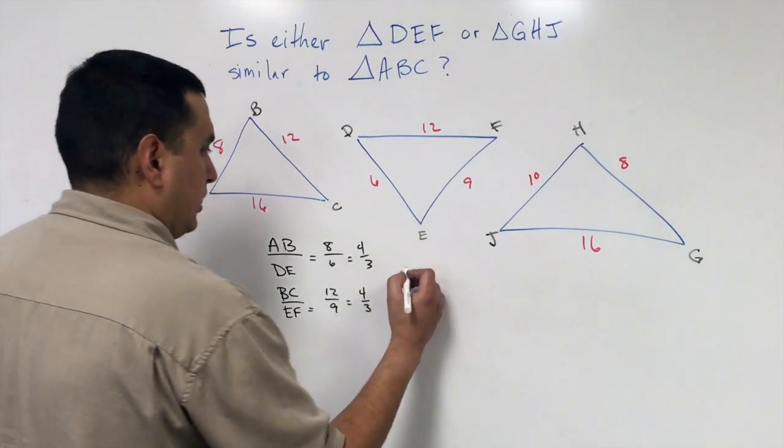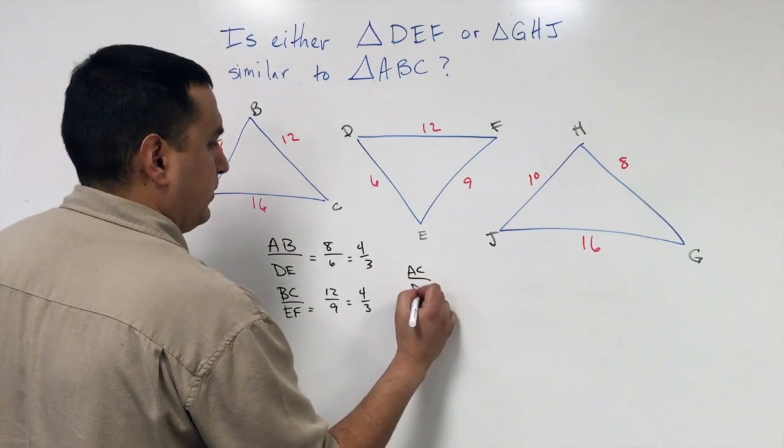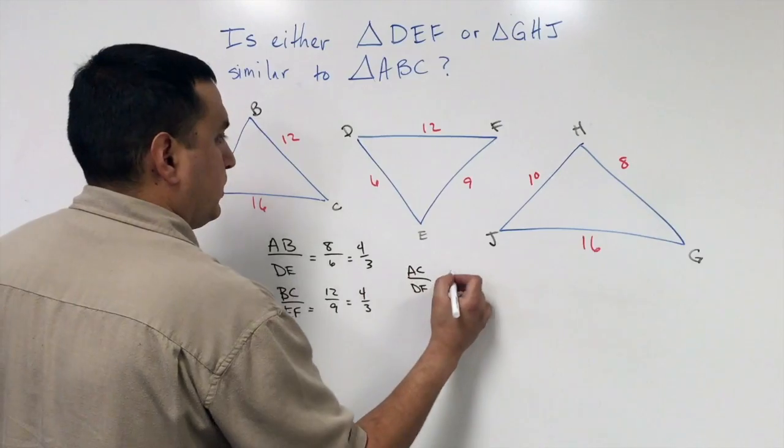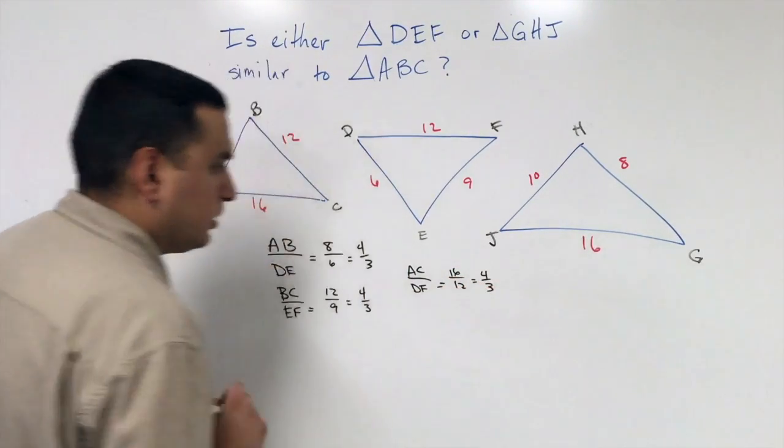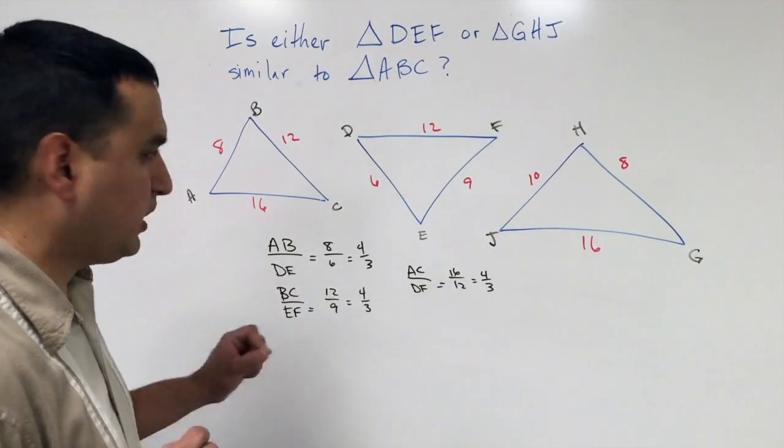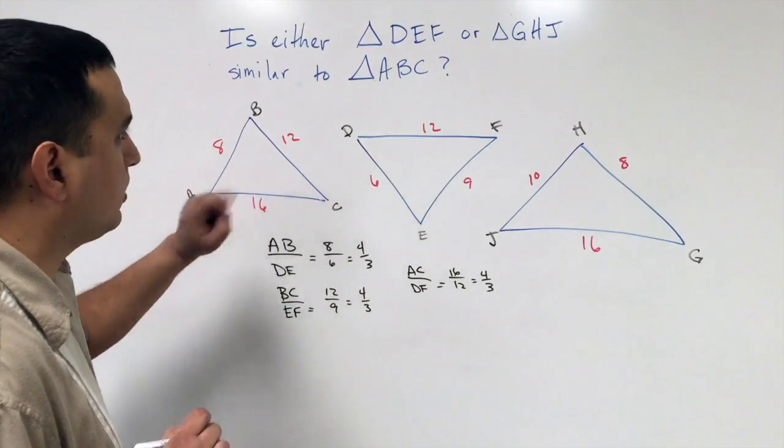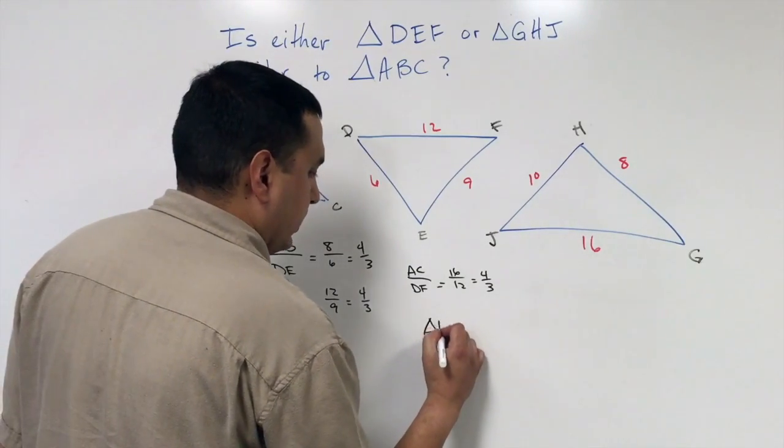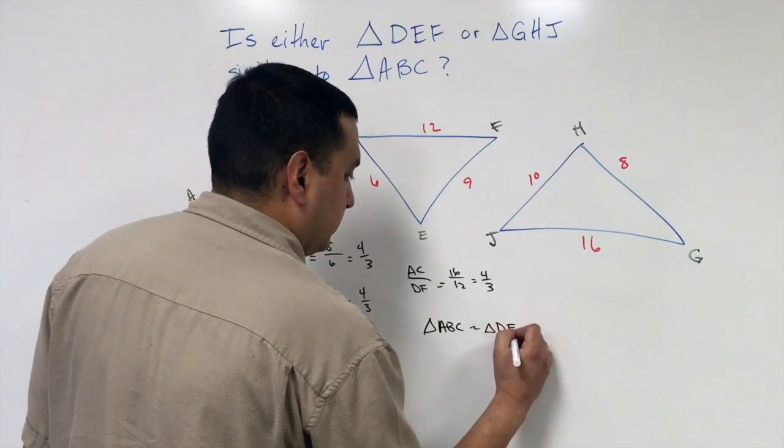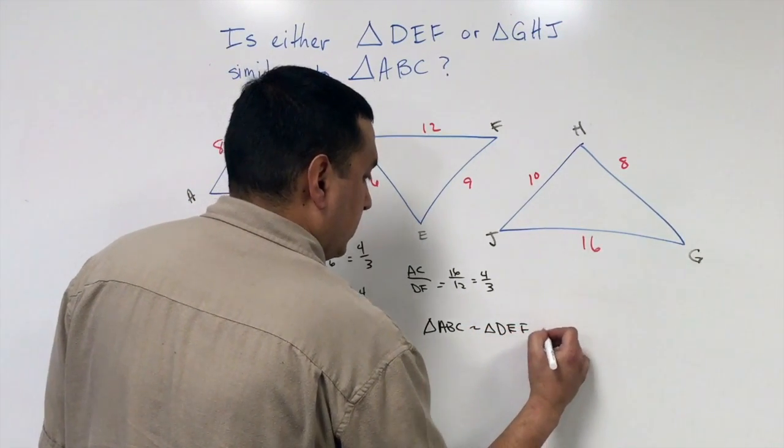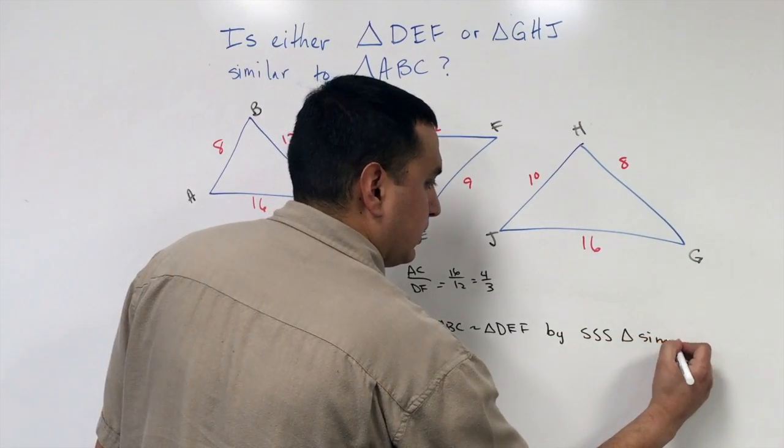If I look at this last pair, my longest side, that's going to be AC over DF, which is going to be 16 over 12. If I reduce that, I get 4 thirds. Now, since all three of these are the same ratio, that means these two triangles are in fact similar. So triangle ABC is similar to triangle DEF by what's called the Side-Side-Side triangle similarity theorem.